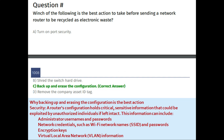Backing up and erasing the configuration is the best action for security purposes. A router's configuration holds critical sensitive information that could be exploited by unauthorized individuals if left intact. This information can include administrator usernames and passwords, network credentials such as Wi-Fi SSIDs and passwords, encryption keys, and virtual network information. The correct answer is C: backup and erase the configuration.